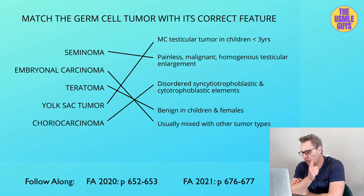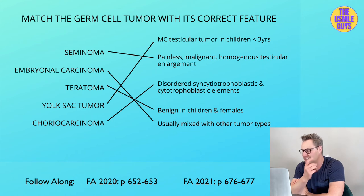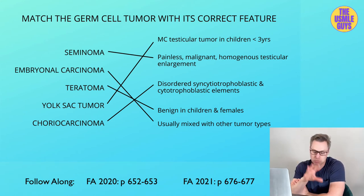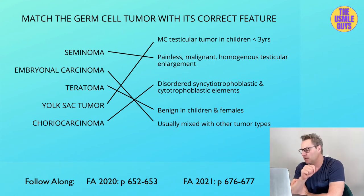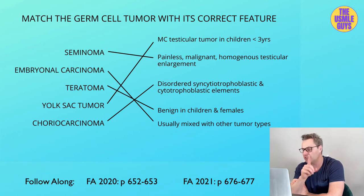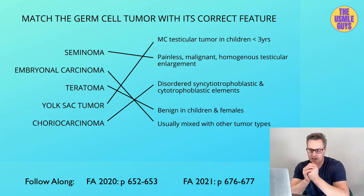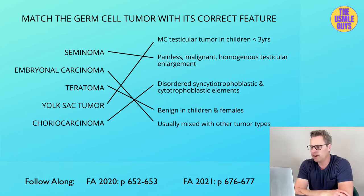The last of the germ cell tumors is the choriocarcinoma, characterized by disordered syncytiotrophoblastic and cytotrophoblastic elements. An important note is that it can spread through the blood to the brain and lungs. Another unique finding: because HCG is very high in this tumor and the alpha subunit of HCG is identical to the alpha subunit of LH, FSH, and TSH, patients can present with signs and symptoms of hyperthyroidism.